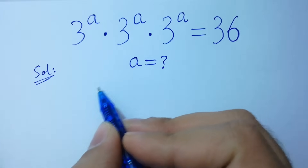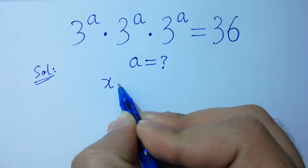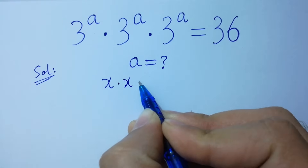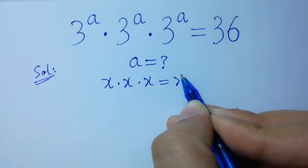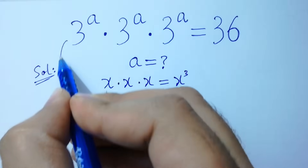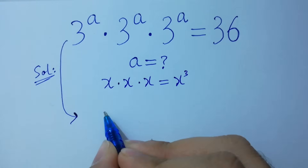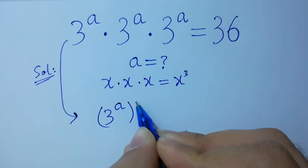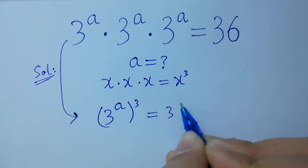As we know, x times x times x equals x cube. So it will be 3 to the power a, cubed, equal to 36.